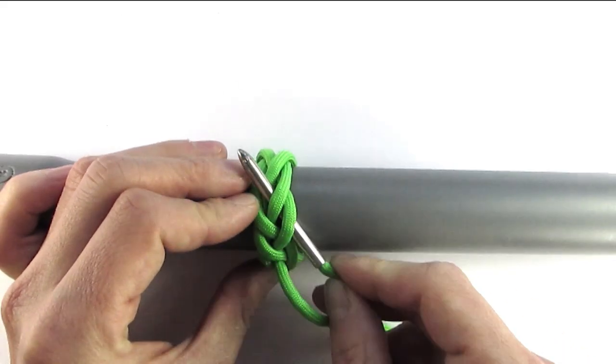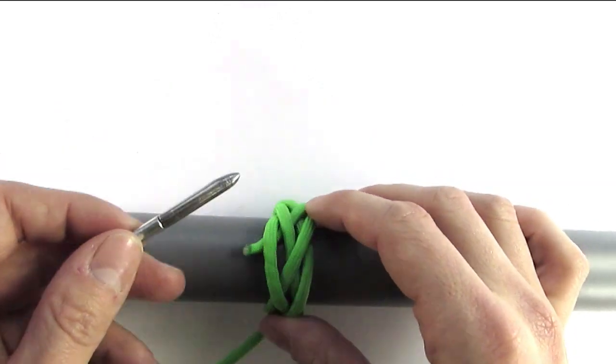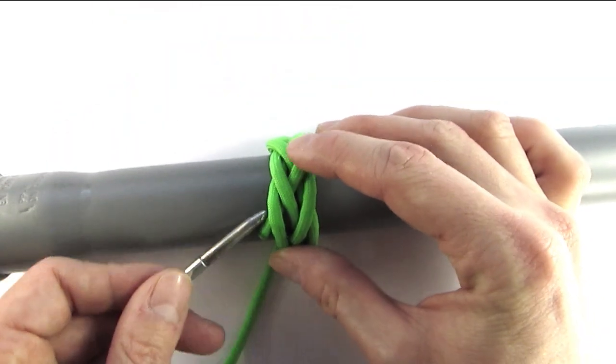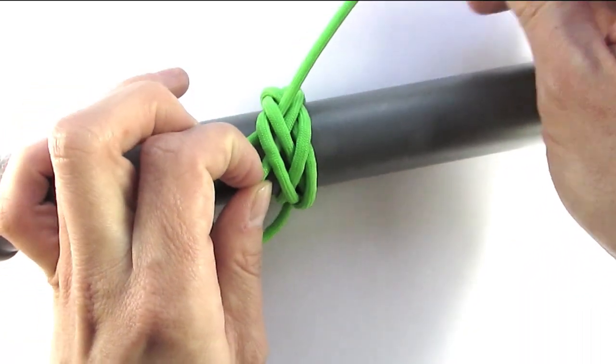At which point we're going to be on the left and all we need to do is insert our working end to the left of the standing end, and this completes the Spanish ring knot.